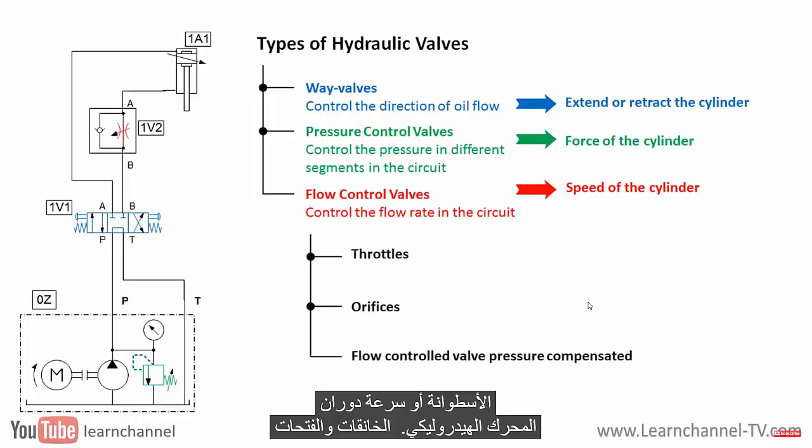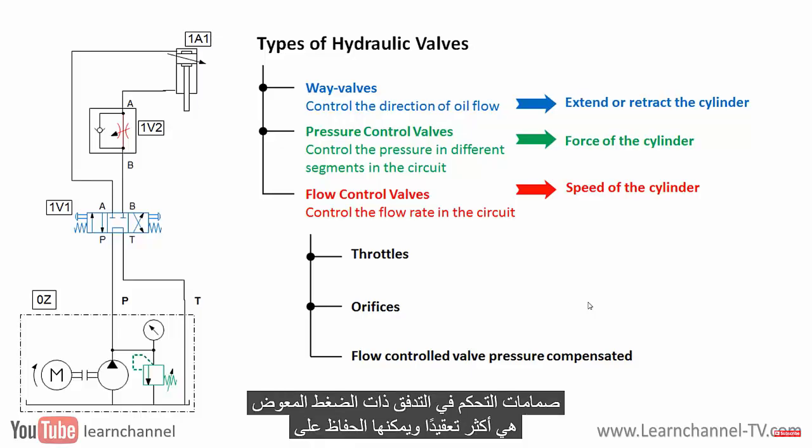Throttles and orifices are simple components that can control the flow rate across their cross-section. Flow control valves that are pressure compensated are more complex and can keep the flow rate constant even with a variable load. More about this device later.